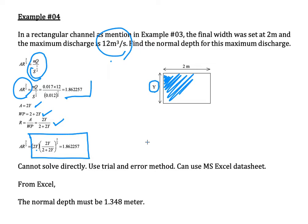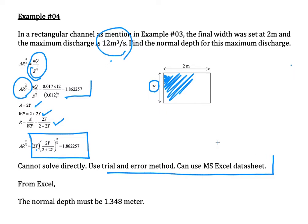You can solve this using the equation-solving function on your scientific calculator. If you don't know that method, you can use the trial and error method. Using an Excel spreadsheet is the simplest approach for trial and error, and from this calculation the normal depth equals 1.348 meters.